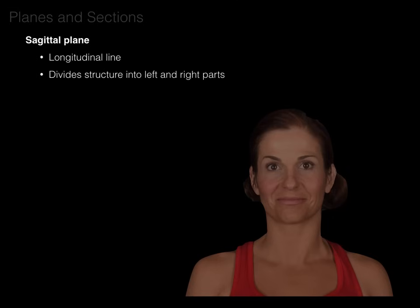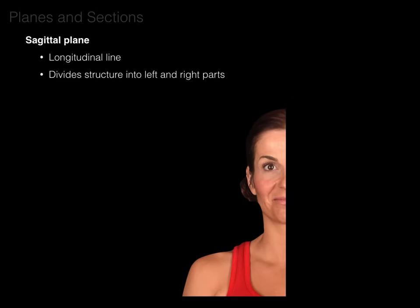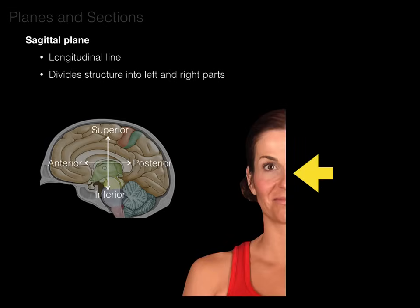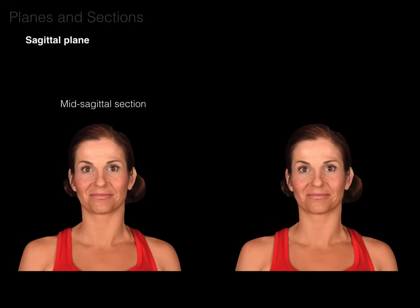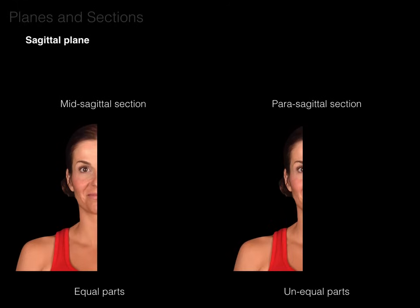We'll start with the sagittal plane. It is a longitudinal line that divides structures into left and right parts. The sagittal plane really helps to study anterior and posterior relationships, and superior and inferior relationships inside the human body. There are two types: a mid-sagittal section, which goes right down the middle and divides a structure into equal parts, and a parasagittal section, which divides a structure into unequal parts — for example, through an orbit.